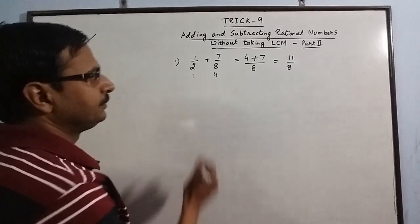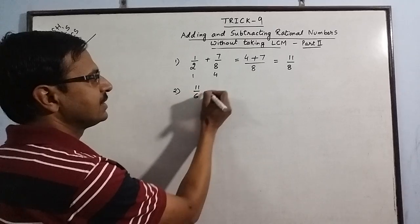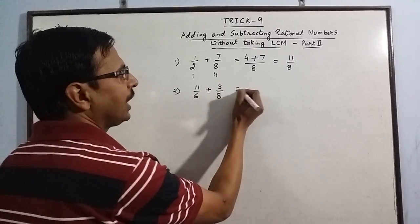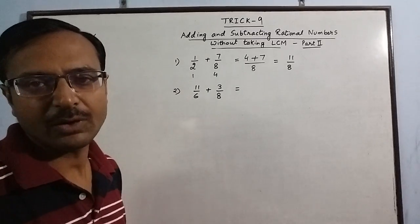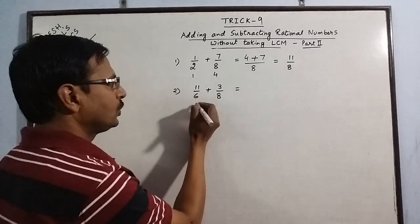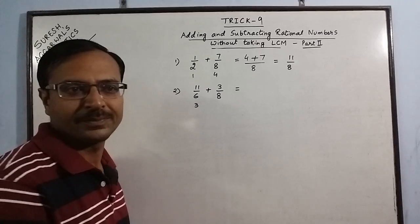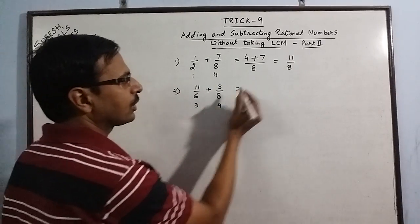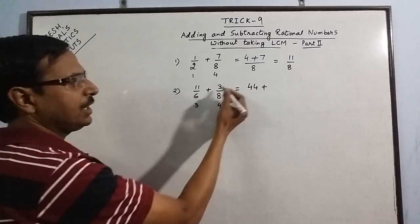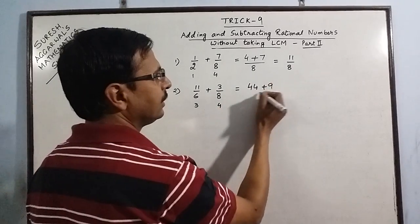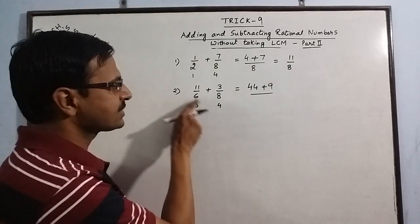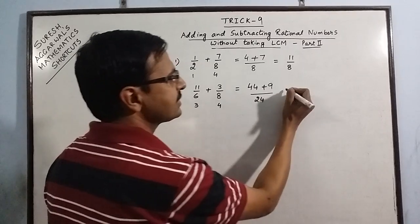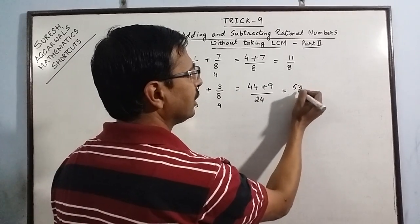Let us take one more example: 11/6 plus 3/8. Again, 6 and 8 have a common factor of 2 between them — 2 threes are 6 and 2 fours are 8. So: 11 times 4 is 44, and 3 times 3 is 9. The denominator is either 6 times 4 or 8 times 3, both giving 24. So the final answer is 53/24.